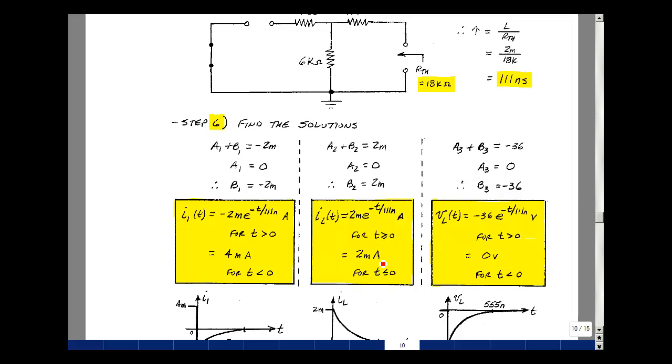The voltage across the inductance, A plus B was equal to minus 36. A was equal to 0, so B is equal to minus 36. So the voltage across the inductance is minus 36 E to the minus T over tau for T greater than 0.